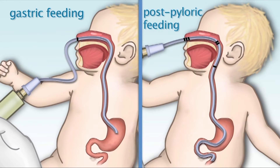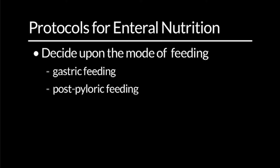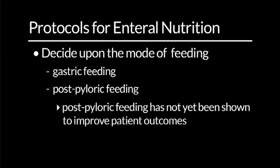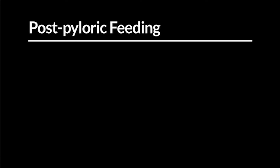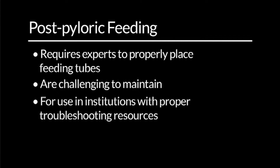The choice of feeding site is always discussed and often debated — feeding in the stomach, called gastric feeding, versus feeding in the small intestine, called post-pyloric feeding. The exact merits of one versus the other are unclear. While studies suggest improved nutrient delivery and faster reaching of goals via the post-pyloric route, it has not been convincingly shown to improve outcomes in the pediatric ICU. Additionally, post-pyloric tubes require experts to place them and are challenging to maintain, and hence must be used only in areas where resources are available.